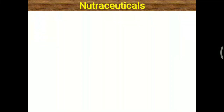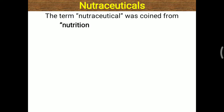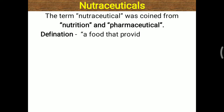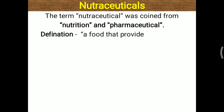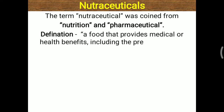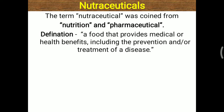Today's topic is about nutraceuticals. This word was coined from two words: nutrition and pharmaceutical. Nutrition is very helpful for the growth of the body as well as to prevent any disease. Pharmaceutical means we are taking different kinds of drugs, basically for the purpose of preventing or curing the disease. So the definition of nutraceutical: it is a kind of food that provides medical or health benefit, including the prevention and/or treatment of disease.